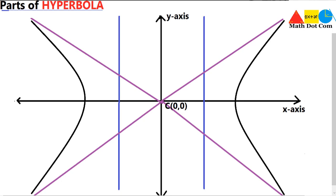The first part we have seen here is the center of the hyperbola. For the standard hyperbola, that is (0, 0), this is the center of the hyperbola where x is 0 and y is 0.